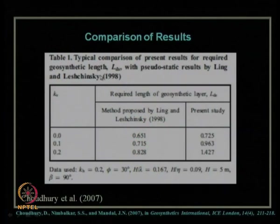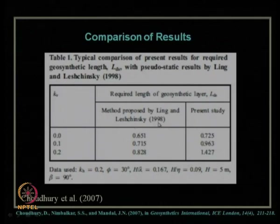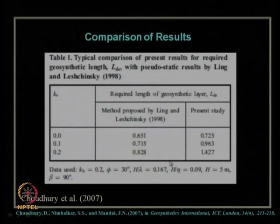The comparison of required geosynthetic reinforcement length for direct sliding, expressed as non-dimensional L_DS/H, is shown for different k_v and k_h values against Ling and Leshchinsky 1998 (ASCE). The pseudo-static analysis of the earlier study is less critical than our present pseudo-dynamic approach, which provides a more critical and safer design. With this, we have come to the end of today's lecture and will continue further in the next lecture.